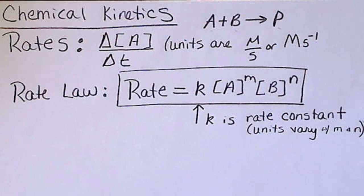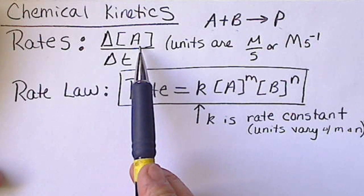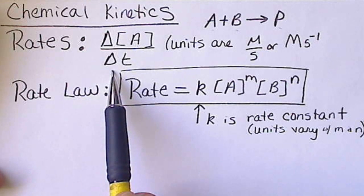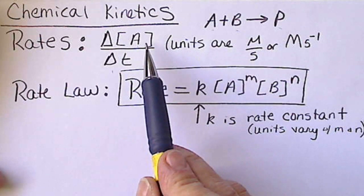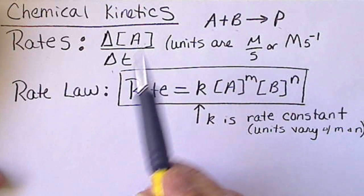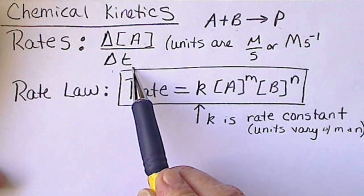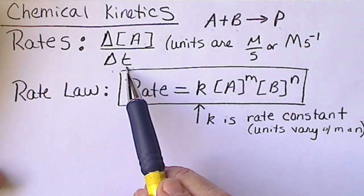There are vocabulary words all involving the word rate that we need to keep straight. A rate is always a change in concentration divided by a change in time. This is just like the slope of a linear equation, so we may be given two concentrations at various times, or we may just be told that a concentration goes from one value to another in a hundred seconds.